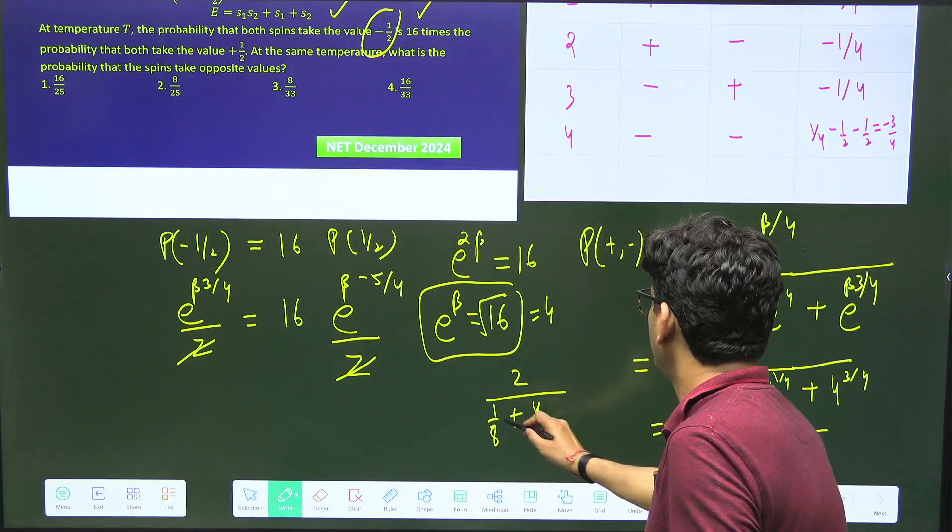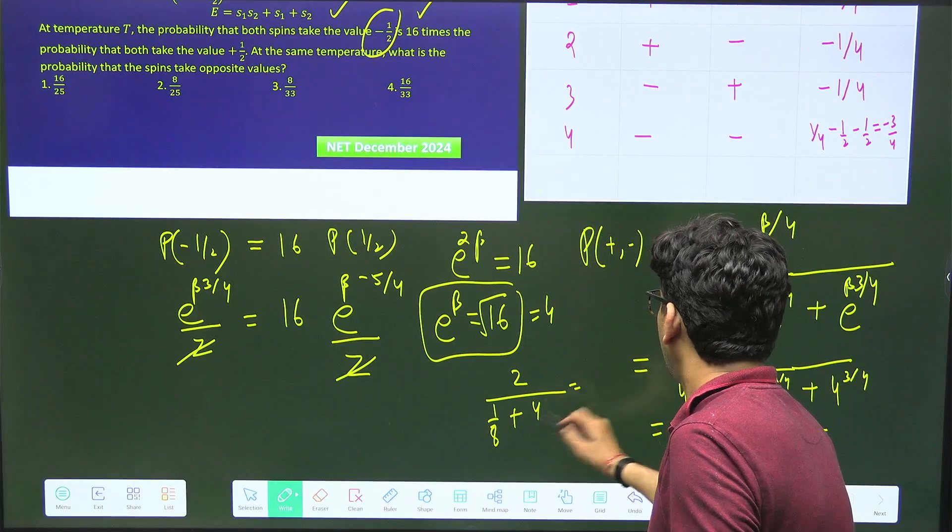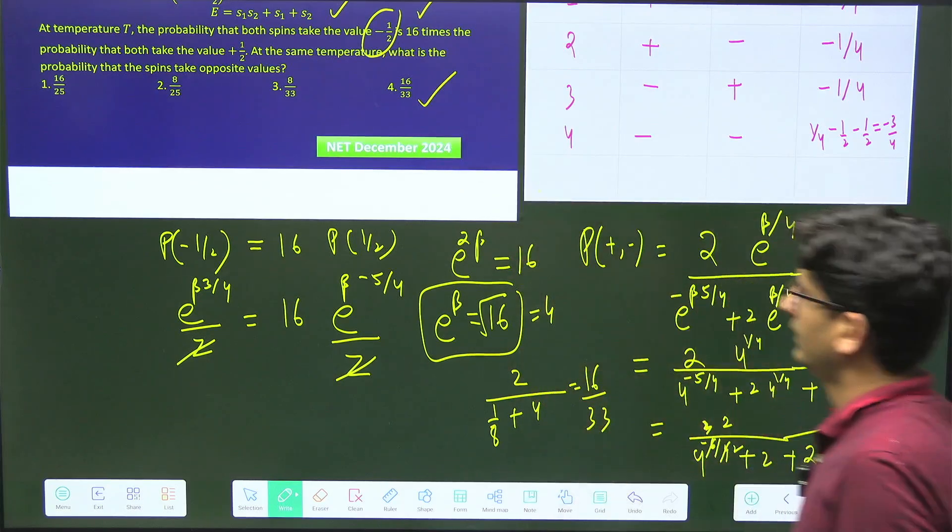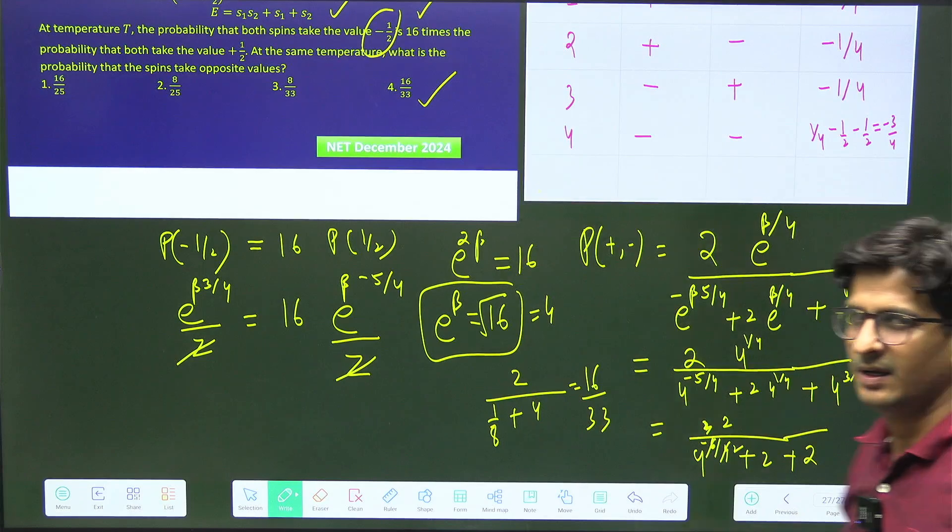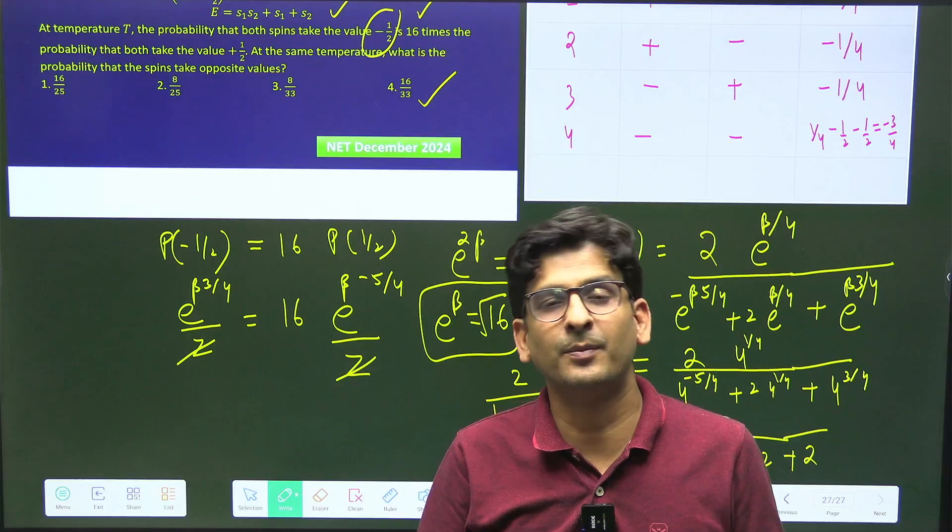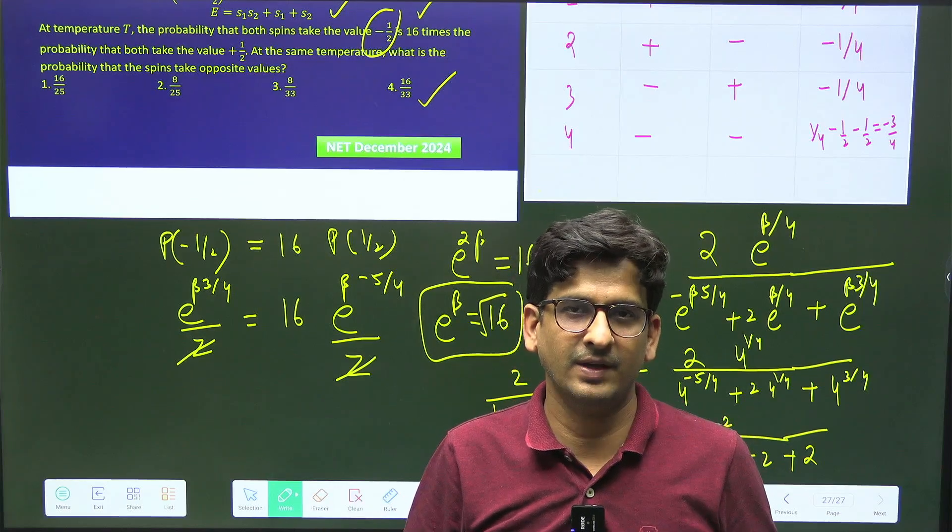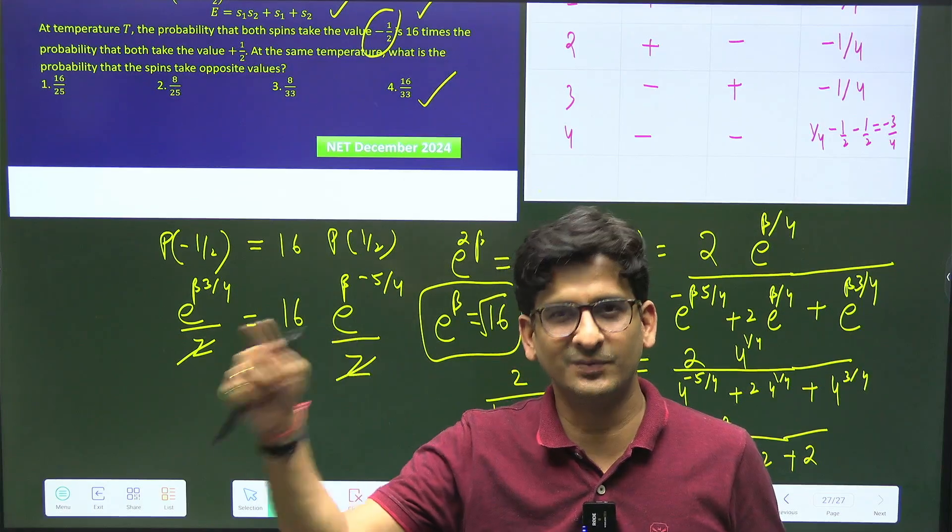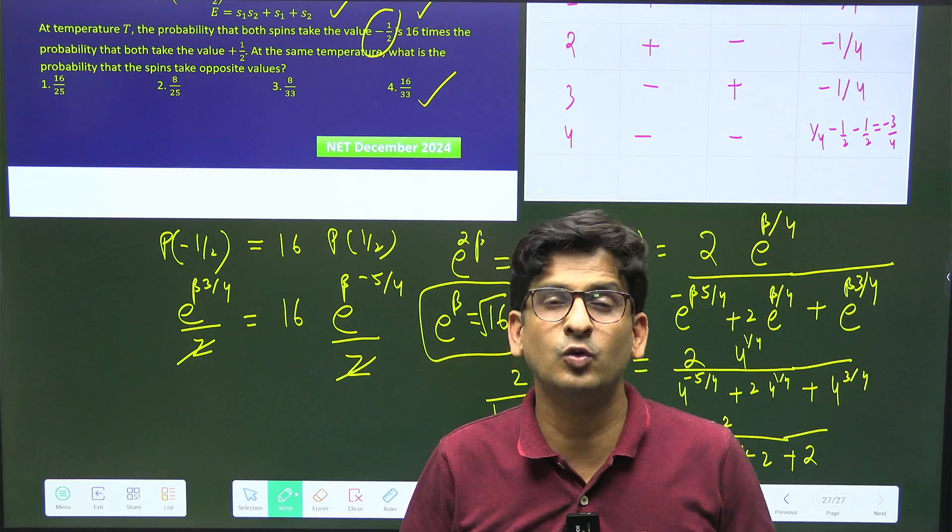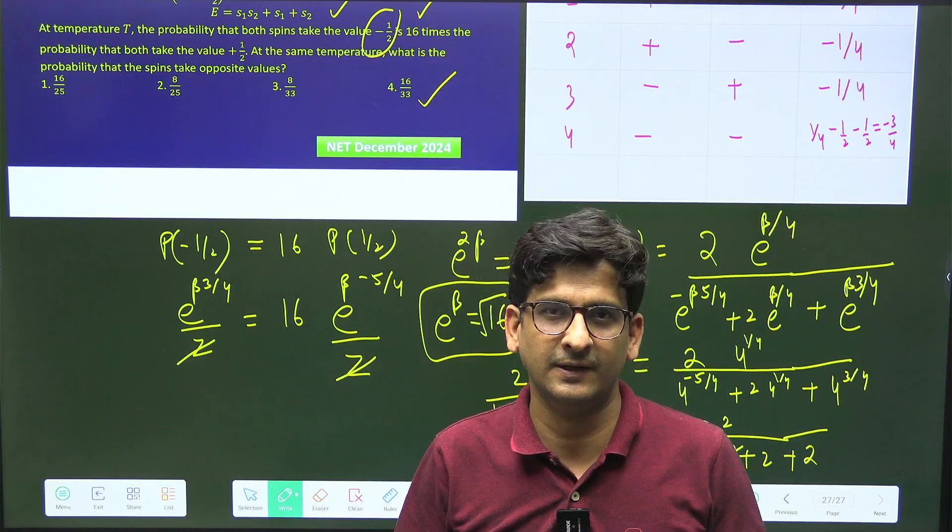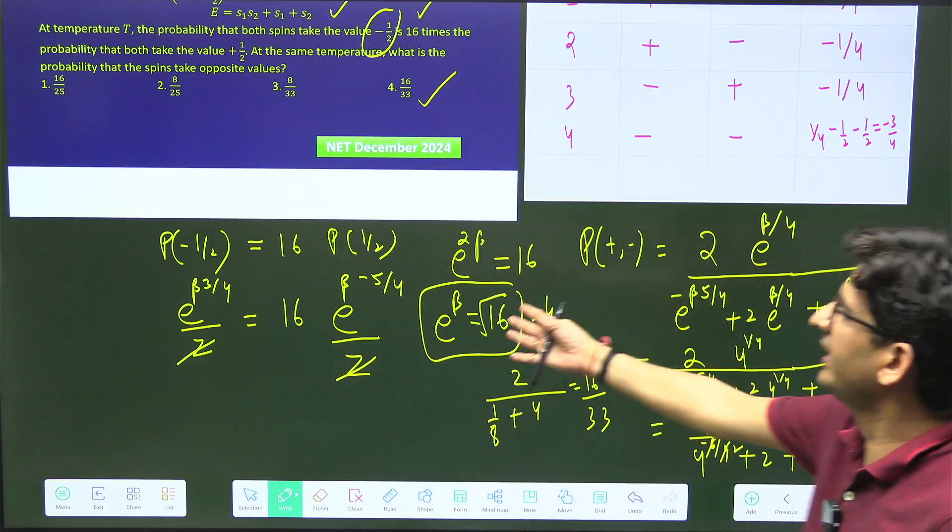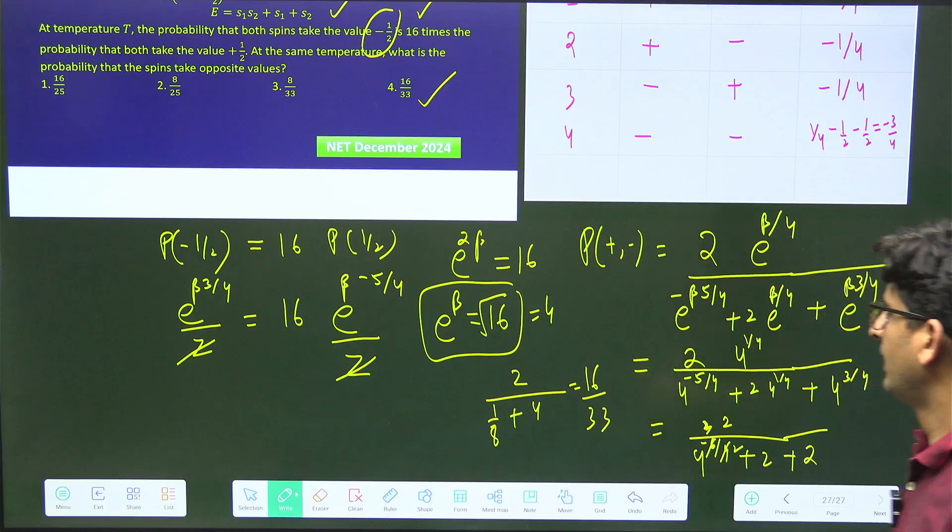This will become 2 over square root of 4, which is 2, and 2 to the power minus 3 will be 1 by 8 plus 2 plus 2. So the denominator is 1 by 8 plus 4, which gives 33 by 8, or just 33 and 8 times 16. So it will be 16 by 33, which is the fourth option.